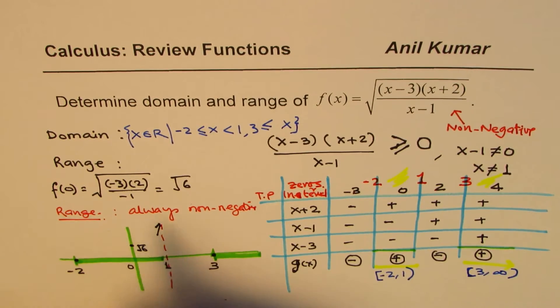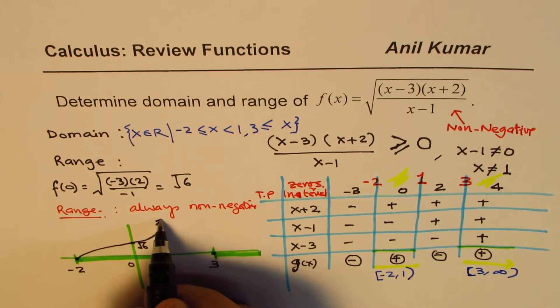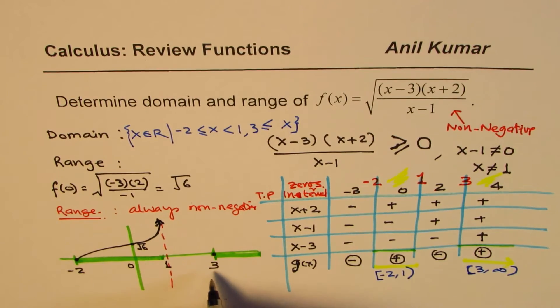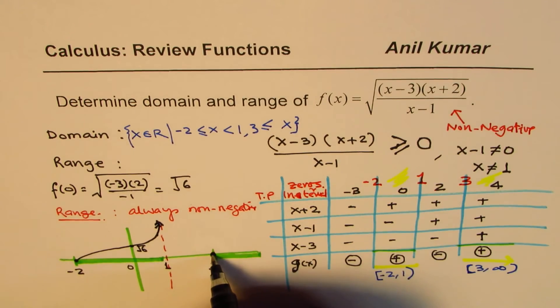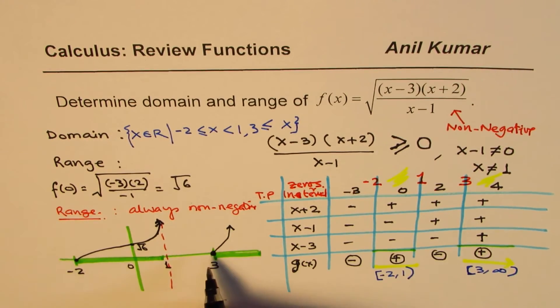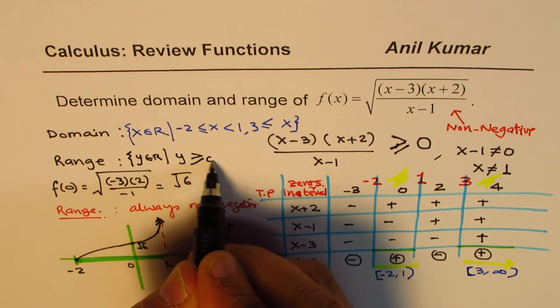So, that kind of gives you an idea that this side of the graph could be kind of like this. That's the asymptote. And on this side, it starts from 0. You could take some more values, and of course, it is going to be increasing. So, that gives you an idea that the range should be y belongs to real numbers, where y is greater than equal to 0, because for two values, it is 0. So, it is always increasing. That's how the square root functions normally are.